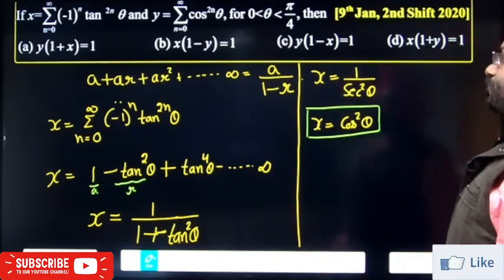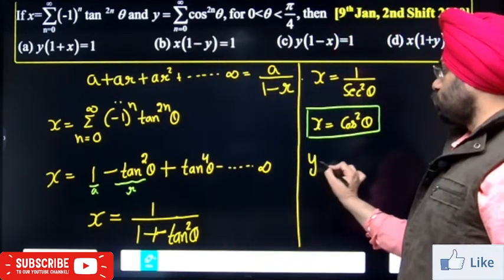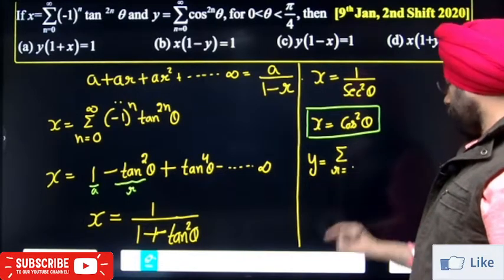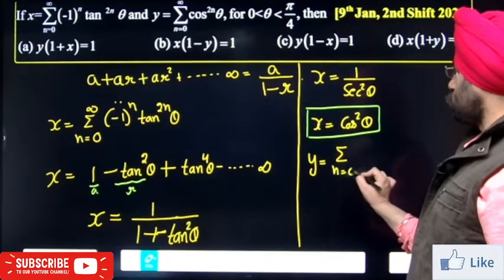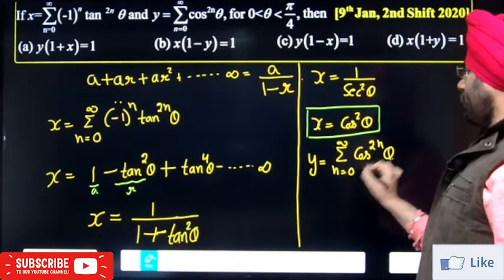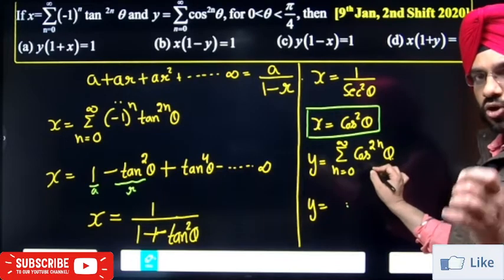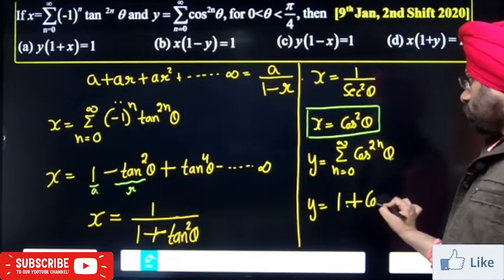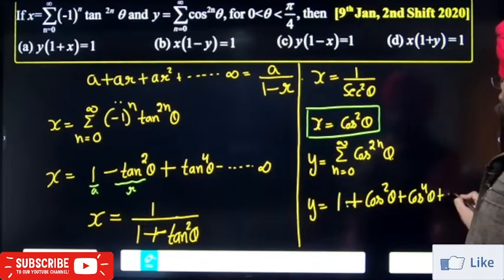Now for the next term Y. Y is equal to summation of n equals 0 to infinity of cos raise to power 2n of kθ. Put value of n = 0: cos raise to power 0 is 1. Put n = 1: we get cos²θ. Put n = 2: we get cos⁴θ, and so on up to infinity.